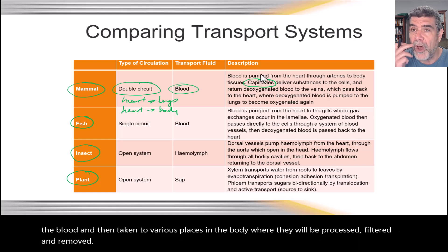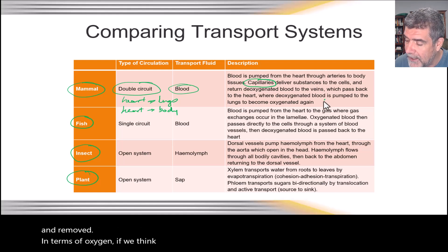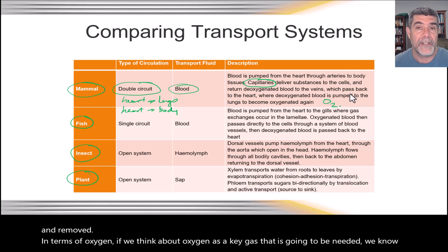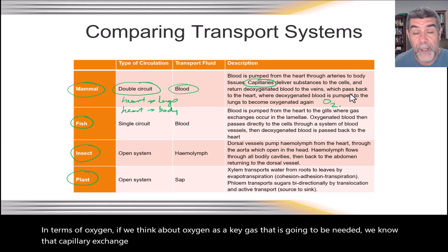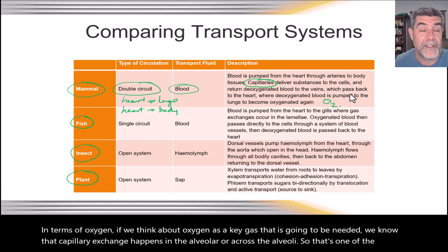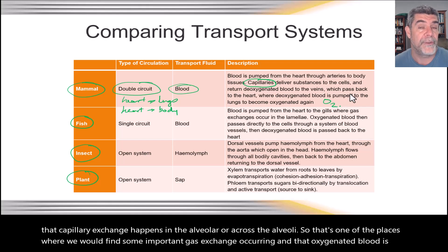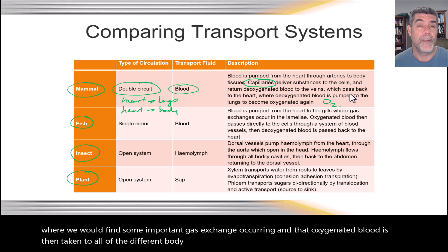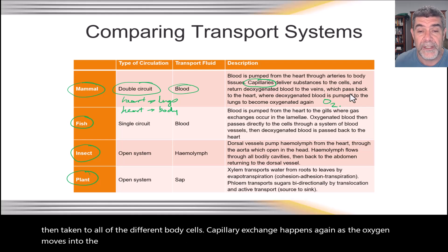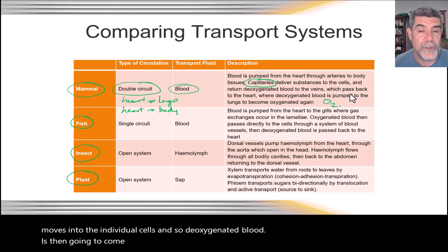In terms of oxygen as a key gas that is needed, capillary exchange happens in the alveoli — that's one of the places where important gas exchange occurs. That oxygenated blood is then taken to all the different body cells. Capillary exchange happens again as oxygen moves into the individual cells, and then deoxygenated blood returns via veins to the heart.